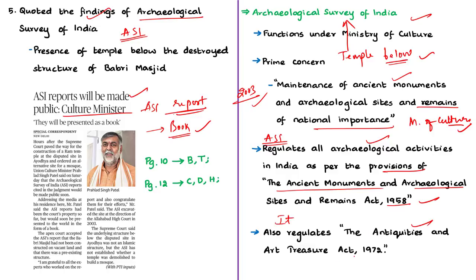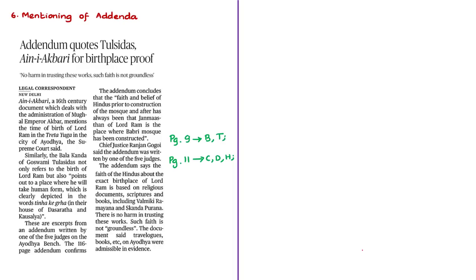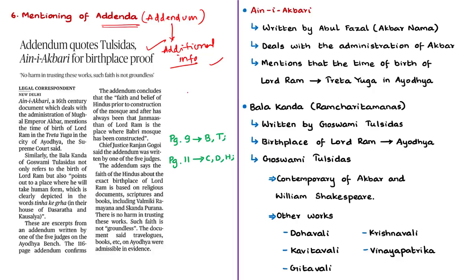While delivering the judgment, the Chief Justice of India mentioned words from an addenda written by one of the judges — addenda being the plural of addendum, meaning an appendix containing additional material at the end of a publication. The addenda quoted certain literature, including Ain-i-Akbari — a 16th-century work by Abul Fazl dealing with the administration of Mughal emperor Akbar. This work mentions the birth of Lord Rama in the Treta Yuga in the city of Ayodhya.